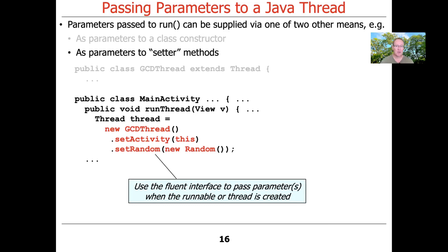so we can put them together in a so-called fluent interface in order to provide whatever parameters we need to the GCD thread object. So when it starts running, those fields have been initialized. This is a very, very common programming idiom in Java,